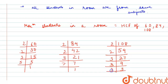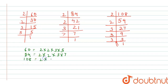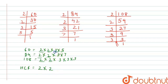Writing the factors together: 60 = 2 × 2 × 3 × 5, 84 = 2 × 2 × 3 × 7, and 108 = 2 × 2 × 3 × 3 × 3. The common factors are 2, 2, and 3, so HCF = 2 × 2 × 3 = 12. The maximum number of students in a single room is 12.